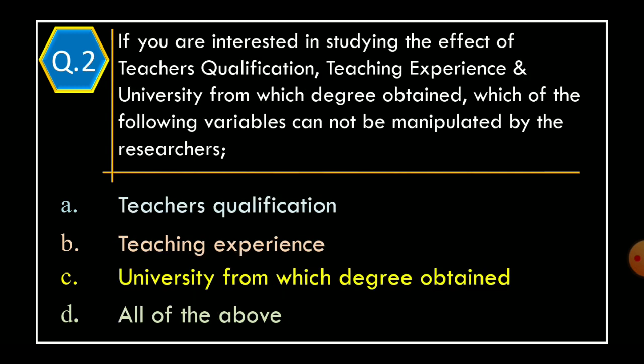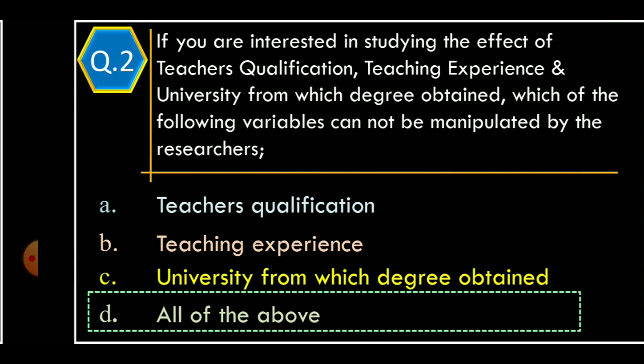Question 2: If you are interested in studying the effect of teacher's qualification, teaching experience, and university from which degree obtained, which of the following variables cannot be manipulated by the researchers? Option A: teacher's qualification. Option B: teaching experience. Option C: university from which degree obtained. Option D: all of the above. The correct option is Option D, all of the above.